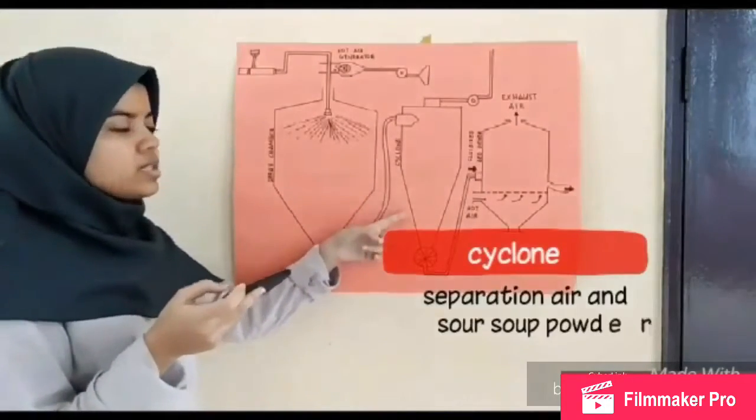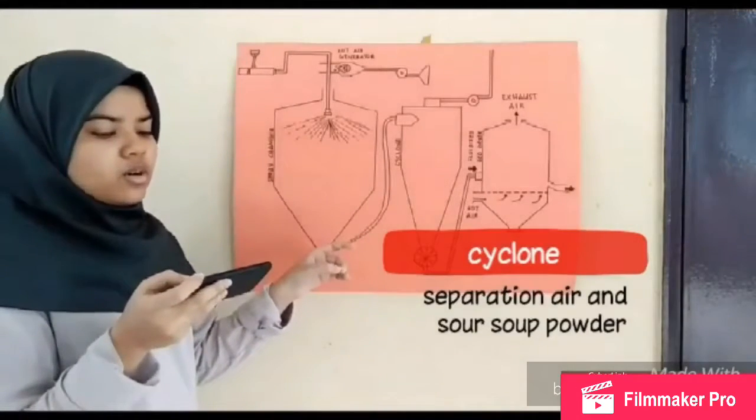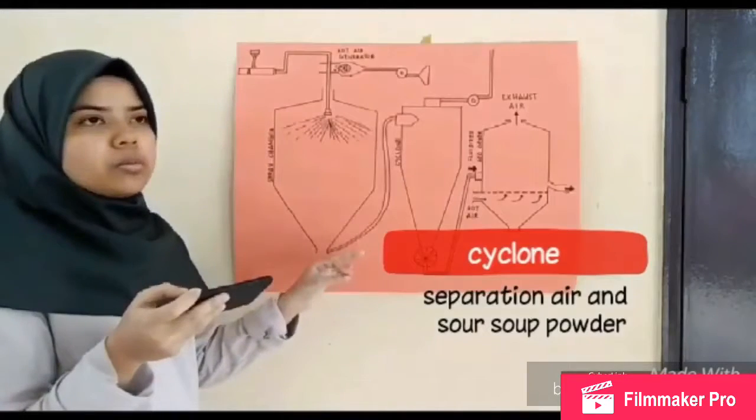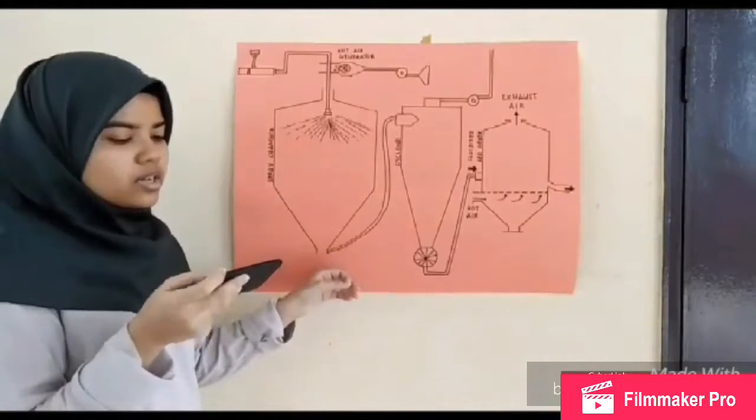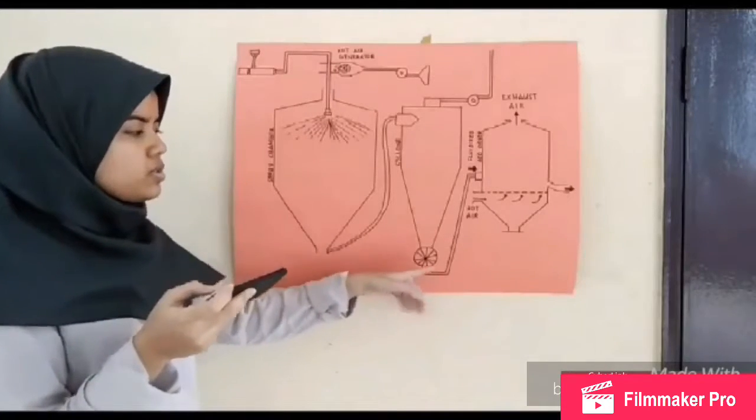This process is where the separation between air and particles or air and the sour soup powder occurs. After the cyclone it will pass through to the next stage.